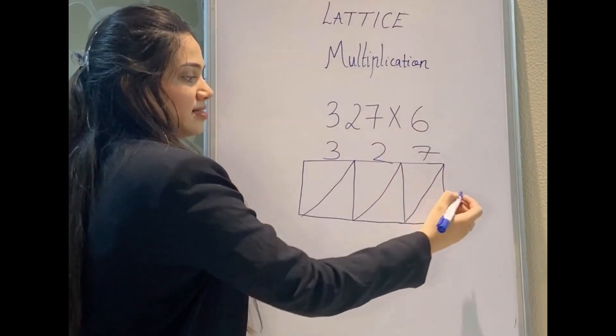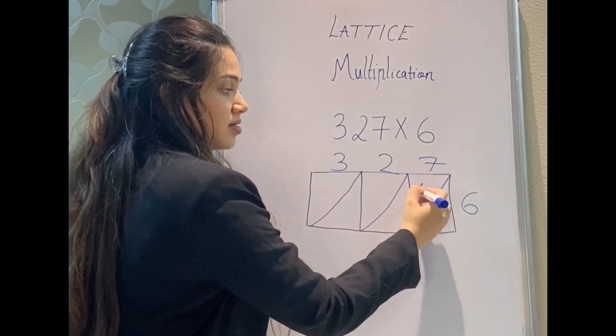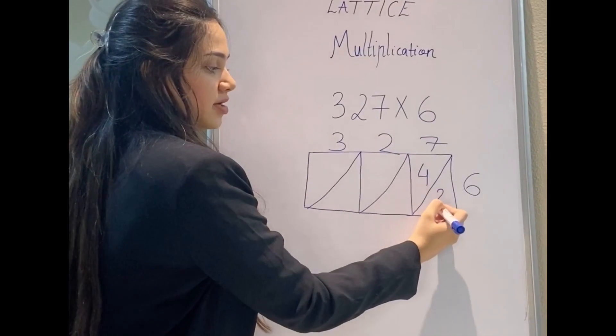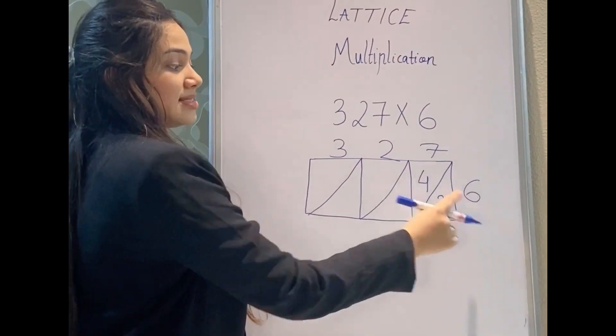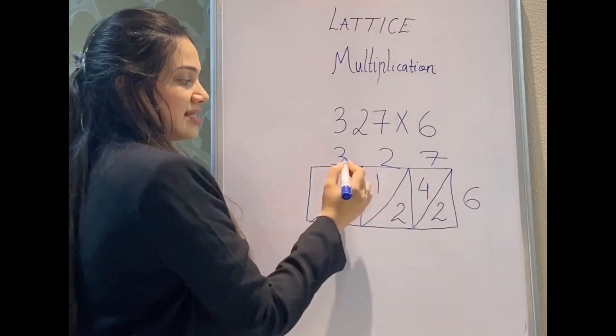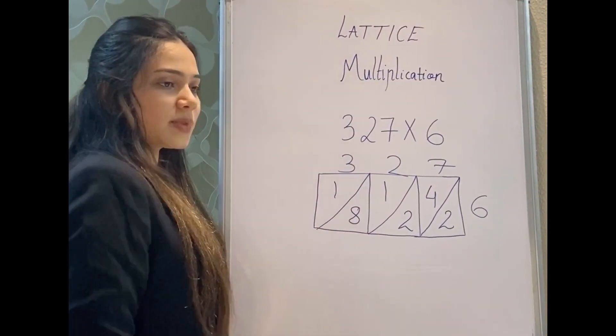Then 7 × 6 is 42, so I write 4 in the upper section and 2 here. 6 × 2 is 12. And 6 × 3 is 18. I'll write it here. Then you have to add these numbers.